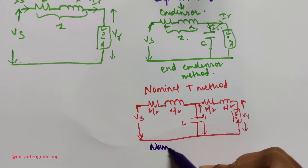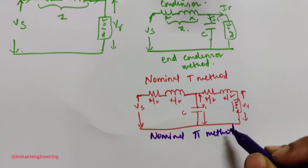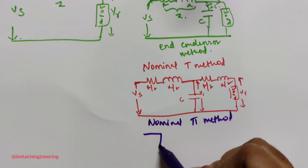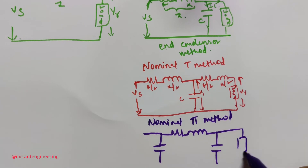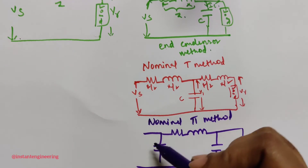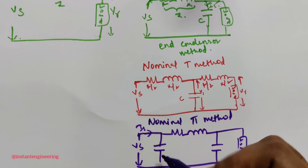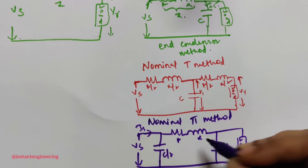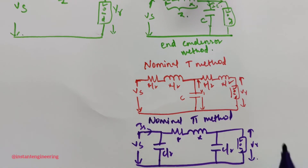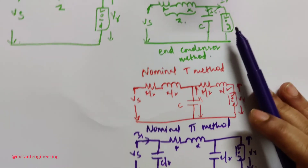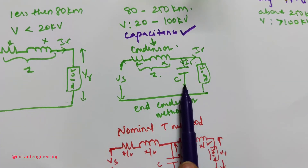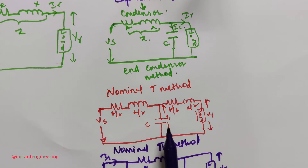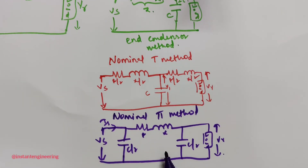In the nominal Pi method, the circuit has a capacitor C/2 on each end, with resistor R and inductor X in the middle, and a load. The sending voltage is Vs and receiving voltage is Vr. This Pi shape is why it is called the nominal Pi method. The distance is 80 to 250 kilometers and capacitances are used for medium transmission lines.